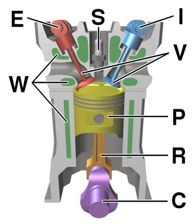There are a number of variations of these cycles, most notably the Atkinson and Miller cycles. The diesel cycle is somewhat different.